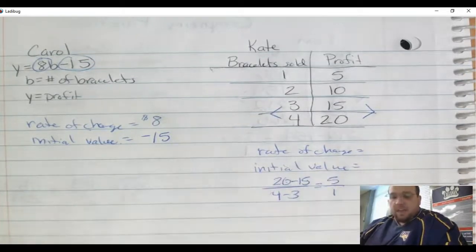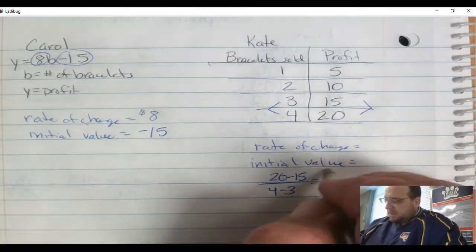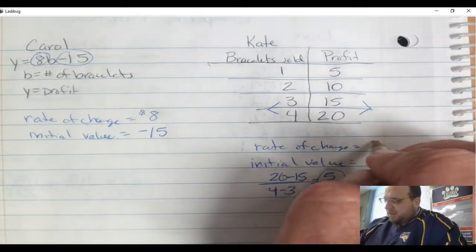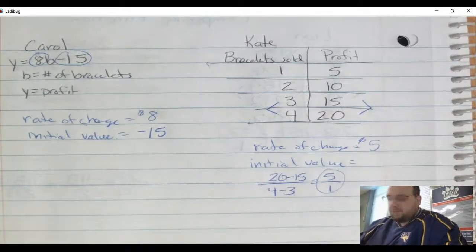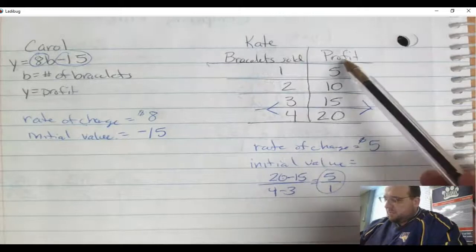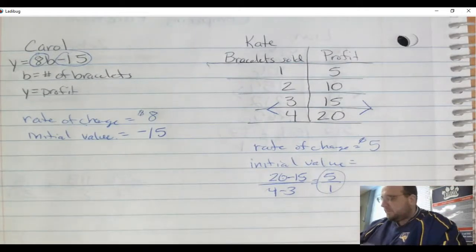20 minus 15 is 5, 4 minus 3 is 1. I get a unit rate, so I don't have to do any simplifying. This tells me that since this is the unit rate, that's the rate of change. So the rate of change is $5. It appears that she is selling bracelets for $5 for her rate of change.